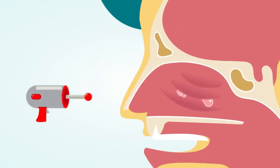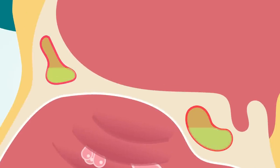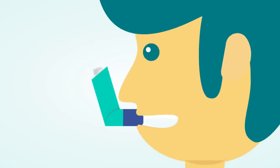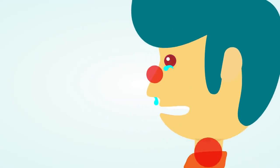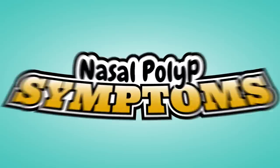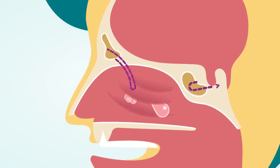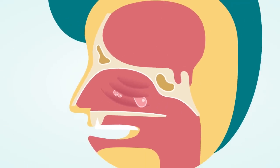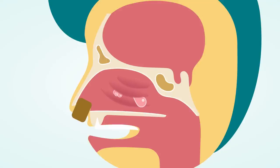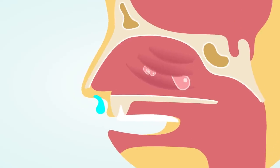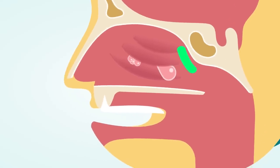Triggers for developing polyps include: A. chronic or recurring sinus infections; B. asthma; C. allergic rhinitis. Symptoms of nasal polyp: polyps can grow large enough to block nasal passages, resulting in chronic congestion. Symptoms include nasal congestion, a sensation that the nose is blocked, and a runny nose.